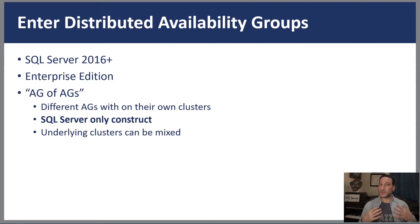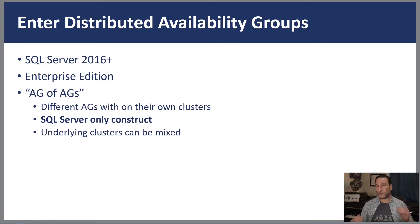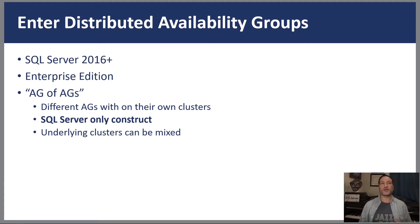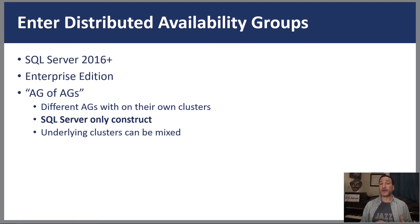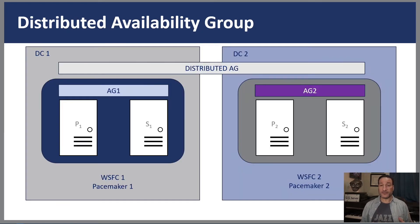Let's talk about distributed availability groups. It is an Enterprise Edition only feature — I'm hoping they officially support it in Standard at some point. It came in SQL Server 2016, and conceptually what it is is an availability group of availability groups, or AG of AGs. The AGs participating in a distributed availability group are on their own separate configurations — it's not one monolithic cluster. The interesting thing about this is that it's a SQL Server only construct, so you're not going to see the distributed AG in your Pacemaker or WSFC. It also makes for interesting things like mixing OS versions.